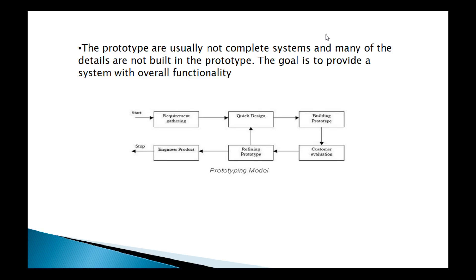Before going to the advantages and disadvantages of this model, let us consider one general example as discussed earlier. In the last class, we used the example of a customer going to a gold shop and asking the salesman about their requirements — for example, wanting a particular type of chain or a particular type of bangle. Those are the requirements we talked about in the last class.